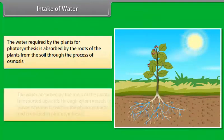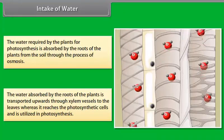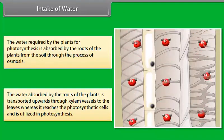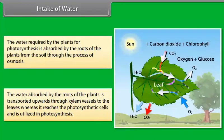The water absorbed by the roots of the plants is transported upwards through xylem vessels to the leaves, where it reaches the photosynthetic cells and is utilized in photosynthesis.